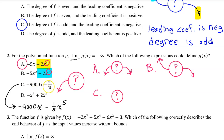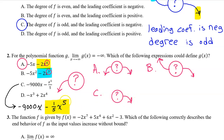For option C, x to the fifth power divided by 5 is the same thing as one-fifth x to the fifth power. The leading coefficient is positive, telling us the polynomial is approaching negative infinity on the right — wait, positive infinity on the right. The fact that the degree is odd means that we have opposite end behavior on the left, and that is not a match.